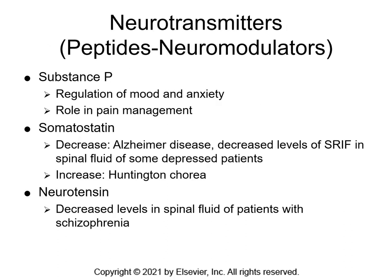Neuropeptides or neuromodulators include substance P, somatostatin, and neurotensin. Substance P helps regulate mood and anxiety and plays a role in pain management. Somatostatin decreases are seen in Alzheimer's and in spinal fluid of depressed patients; increases are seen in Huntington's chorea. Neurotensin shows decreased levels in the spinal fluid of clients with schizophrenia.